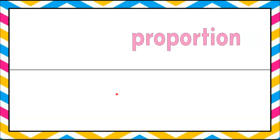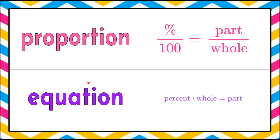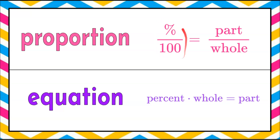We're going to solve it two different ways as well — using a proportion and using an equation. A proportion is a percent written as a fraction, then part to the whole. An equation is: percent of the whole equals that part. Sometimes we'll know the part, sometimes the whole, sometimes the percent — one value, percent, part, or whole, will be missing.